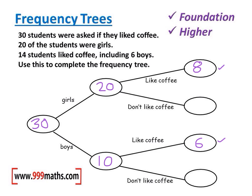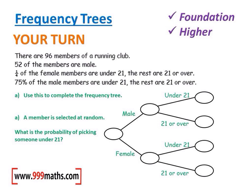On the girls' side, there were 20 girls — if eight of them liked coffee, that leaves 12 who did not like coffee. On the boys' side, there were 10 boys — six liked coffee, therefore four do not like coffee. You can check the trick: if this one's 30, these two should add up to 30, and these four should add up to 30, which they do.